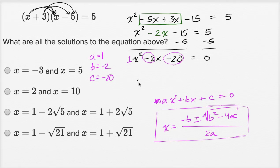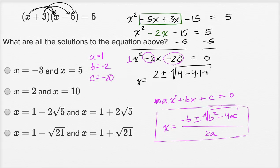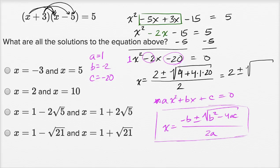So the roots are going to be x equals negative b — well, negative of negative two is positive two — plus or minus the square root of b squared, which is four, minus four times a, which is one, times negative 20. Since it's negative 20 and I'm subtracting it, I put a plus there, all of that over 2a. Since a is just one, that's all over two. So it's going to be 2 plus or minus the square root of four plus 80, which is 84, over two.